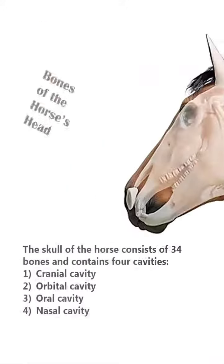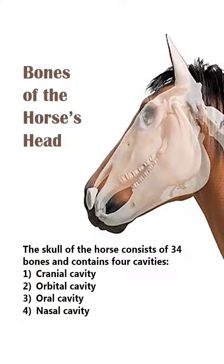The skull of the horse consists of 34 bones and contains 4 cavities: cranial cavity, orbital cavity, oral cavity, and nasal cavity.